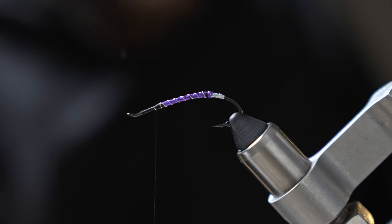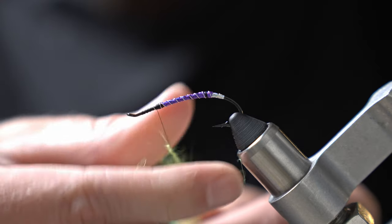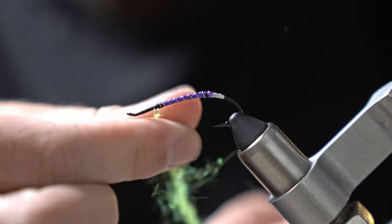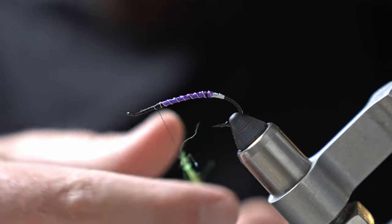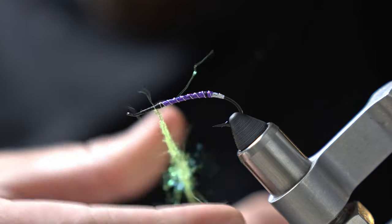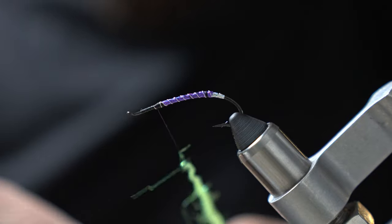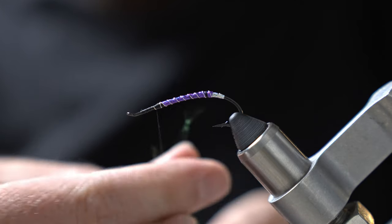And from there we're going to take some ice dub in chartreuse. And like I said, this one is kind of the joker colorway of that purple and chartreuse. I just think it looks cool, it's certainly swung up a few fish for me. But tie this in whatever colors you'd like to.